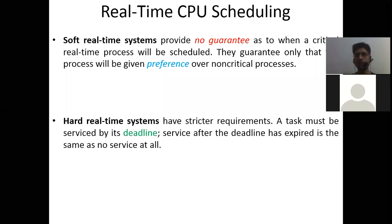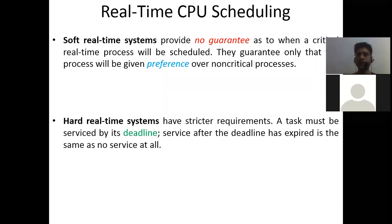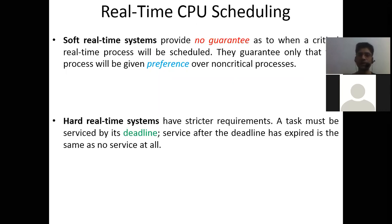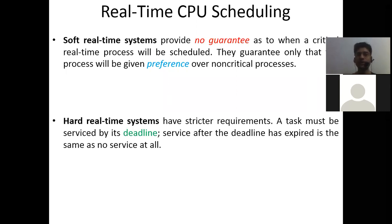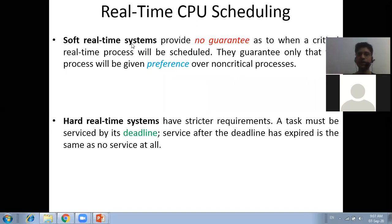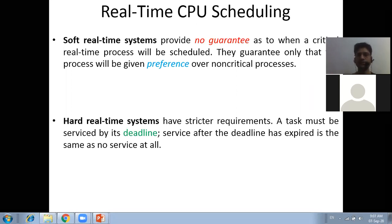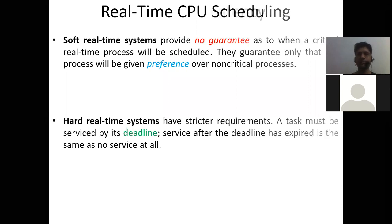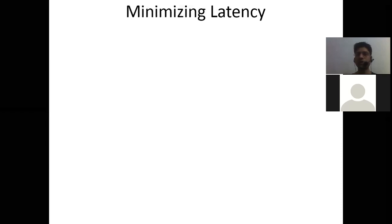To summarize: in a soft real-time system there is a little flexibility — processes can exceed their given time frame but are guaranteed preference over non-critical processes. In a hard real-time system there are strict requirements — processes must be completed within the given time frame only, otherwise it is the same as no service at all.